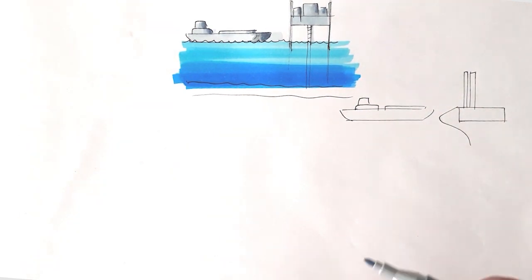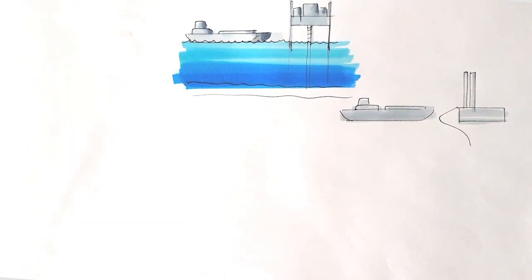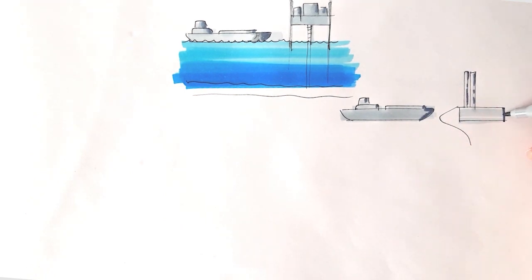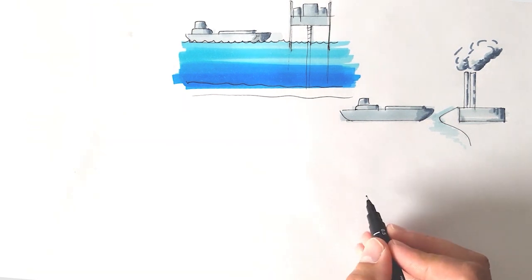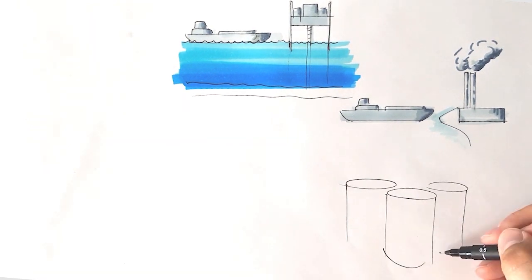The oil tankers then take that oil to oil refineries, which are really bad for the environment as well, producing potentially harmful emissions. The refinery takes the crude oil and turns it into refined oil, types you see in those big oil barrels.